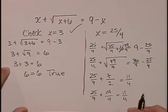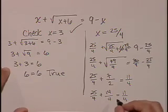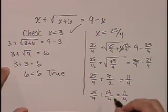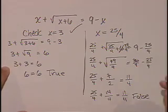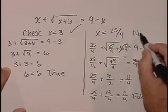Notice that this had been a minus in the middle, we would have gotten 11 fourths, but it's not a minus in the middle. It's plus. We get 39 fourths. This is false. So x equals 25 fourths is not a solution.